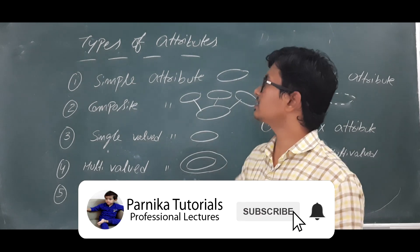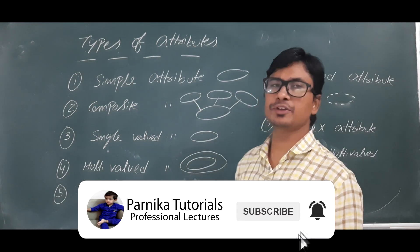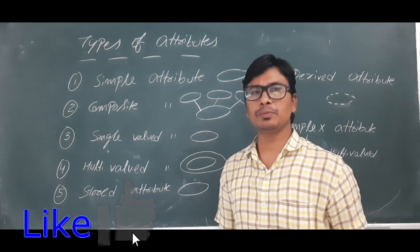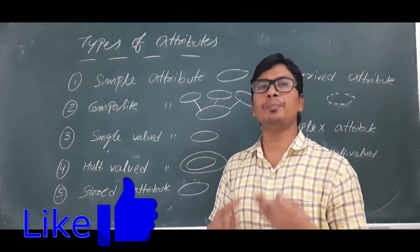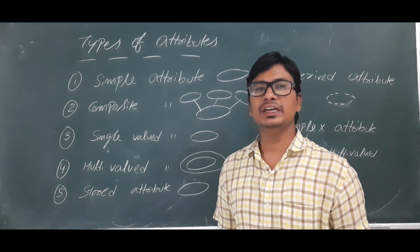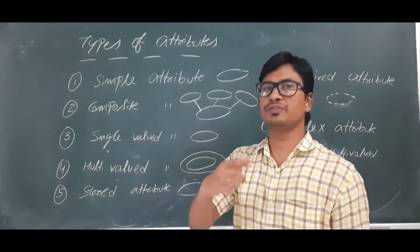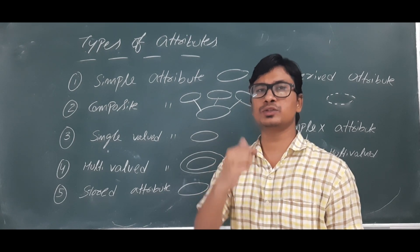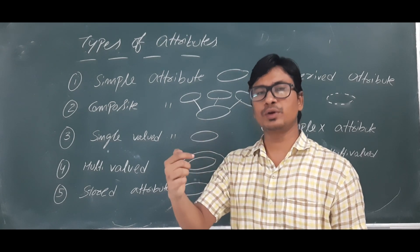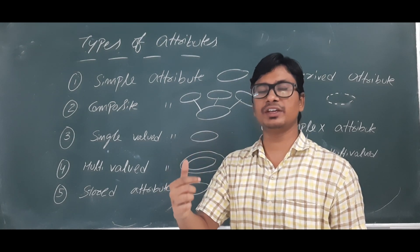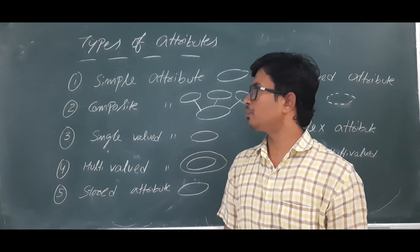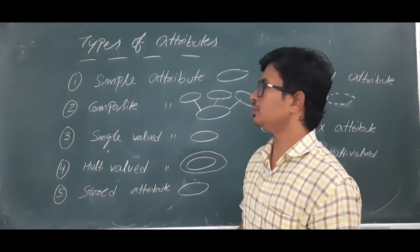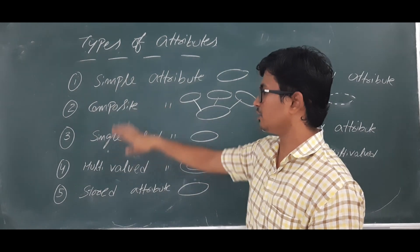Today we will discuss types of attributes. An attribute tells the properties of an entity. For example, if the entity is a student, then student roll number, student name, and the location from where he is will all act as properties. These properties, or attributes, are classified into various types.